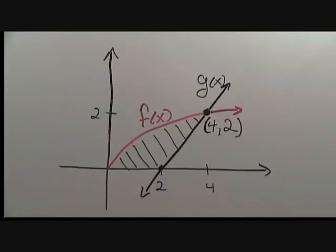The smallest y coordinate we encounter is at the bottom along the x-axis. The largest y value we encounter is up at the top at this intersection point, which is y equals 2.